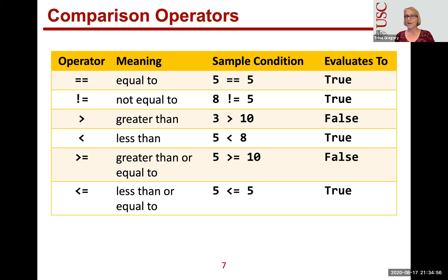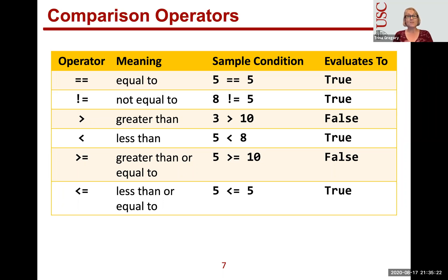The reason we use double equals is that a single equals means assignment — we're assigning a value, not testing one. To check inequality we use the exclamation mark followed by equals (`!=`), and again those two characters must be right next to each other. For example, is 3 greater than 10? No, that's false. Is 5 less than 8? Yes, that's true. These conditions always equate to a Boolean true or false. We can also compare strings using `==` or `!=`.